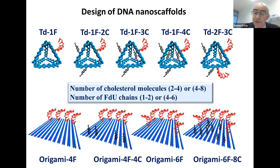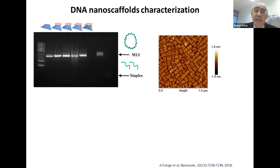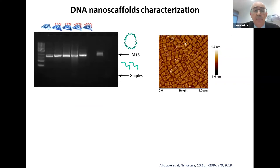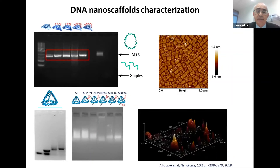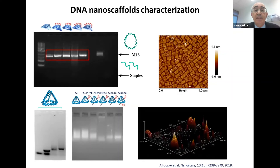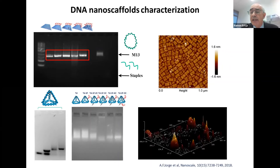The first thing we had to demonstrate is that all this chemistry does not affect the self-assembly. This is done by gel electrophoresis, and we see a single band. Then we can use AFM and see that the origamis are well-made. The small tetrahedron can also be visualized by AFM, but this is very difficult — it is right at the size limit, being only a few nanometers.